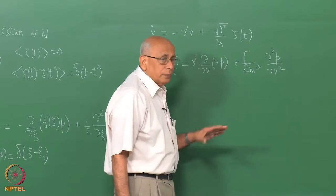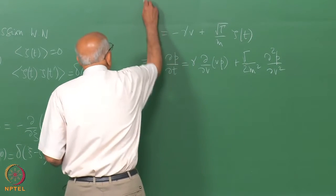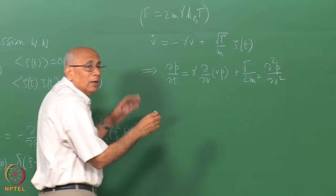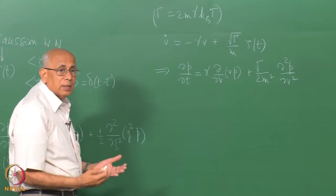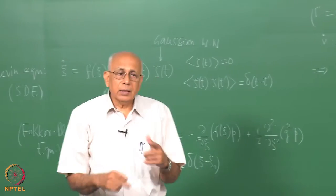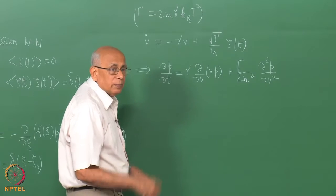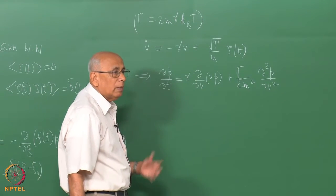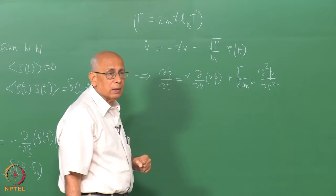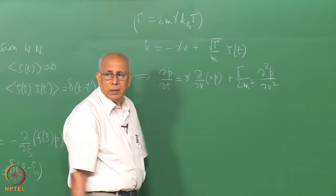We know from the Langevin equation, having already proved the fluctuation-dissipation theorem, that capital Gamma equals 2 m gamma k_B T. For consistency — requiring that the system remains in thermal equilibrium when you average over all realizations of the noise and over all initial velocities — the equilibrium distribution must remain Maxwellian. That happens only if this relation holds, which is the fluctuation-dissipation theorem: the strength of dissipation and the strength of noise must be related in this consistent fashion.